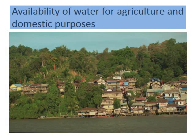The second factor is availability of water for agriculture and domestic purposes. Settlements grow in places where water is available in plenty for both agricultural and domestic purposes. Settlements therefore also grow at the confluence of rivers or on the banks of rivers.